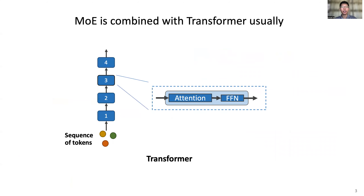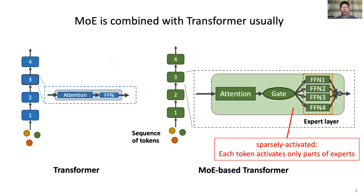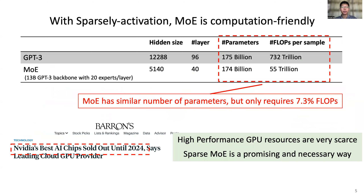MoE is usually combined with transformer. A transformer model consists of many transformer layers. Each layer mainly includes an attention layer and a feed-forward network. As for MoE models, each layer mainly includes an attention layer, a gate, and many experts which are feed-forward networks. After the token goes past the attention layer, the gate will select the best feed-forward network for each token. Thus, each token only activates parts of experts.